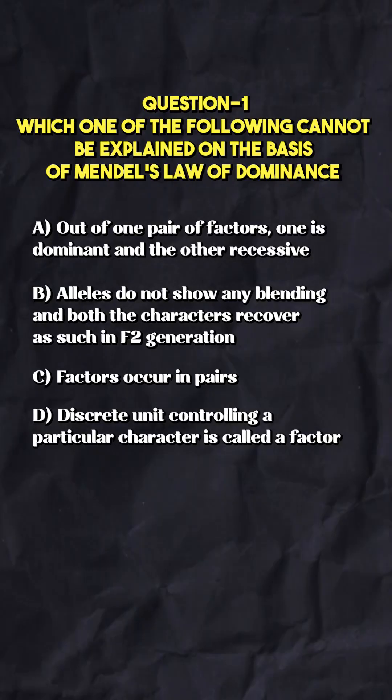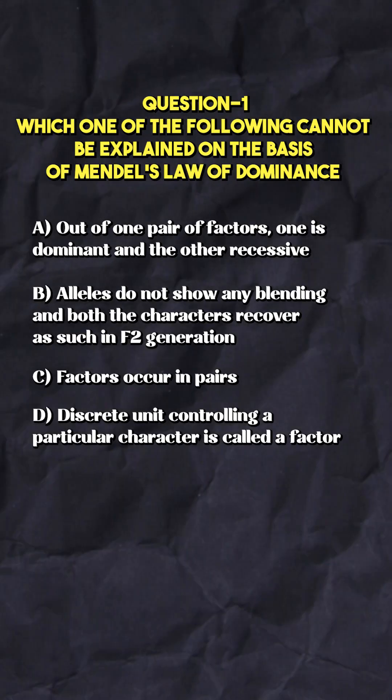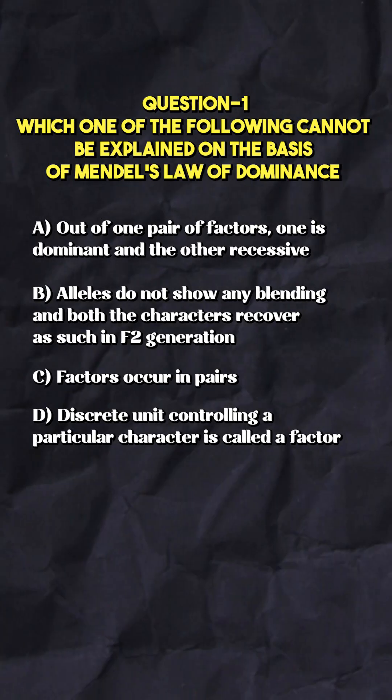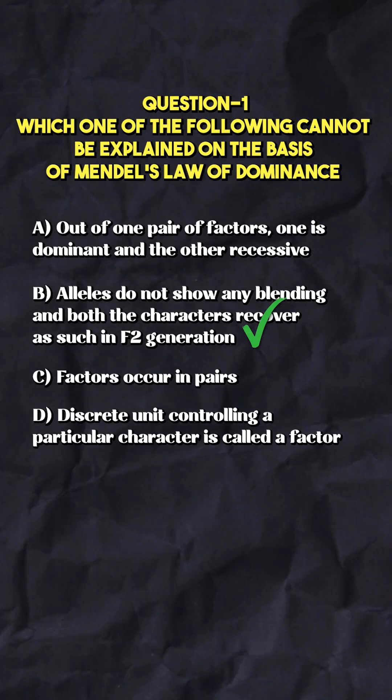Whenever dissimilar factors are present for a particular trait — like capital T and small t — only one will express itself. That is the dominant one, and the one which does not express is the recessive one. So the answer to this question will be the second option.